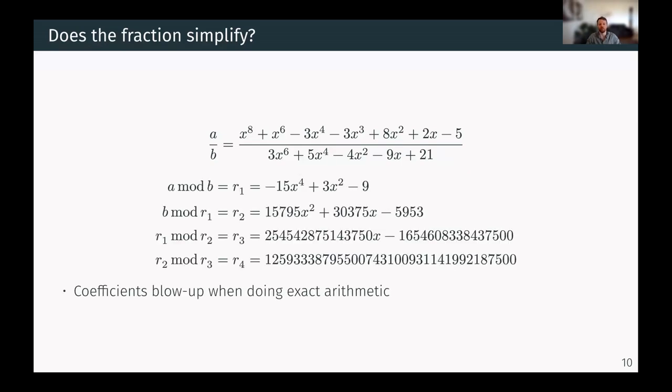So if you apply the Euclidean algorithm to this, you get the following output. Even though we started with 21 as the largest coefficient in the input, now in the output we have a number that doesn't even fit in an i64 anymore. And this is one of the problems of computer algebra, is that intermediate expressions tend to blow up completely if you do exact arithmetic.